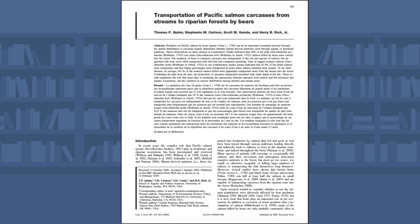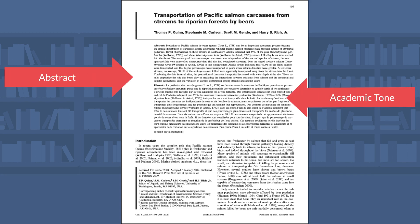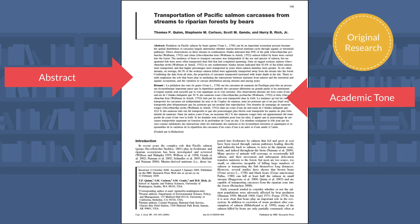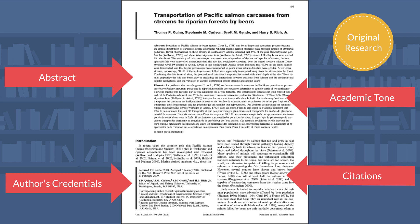Peer-reviewed articles have characteristics that are different from articles published in newspapers or magazines. For instance, peer-reviewed articles frequently have abstracts, have a more academic tone, provide original research, often list the author's credentials, provide citations, and have a bibliography.